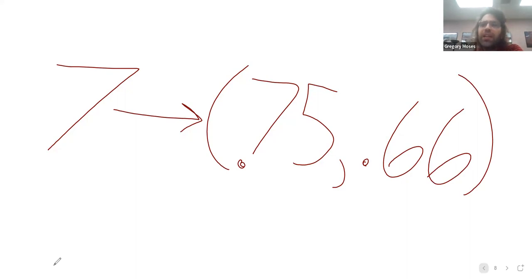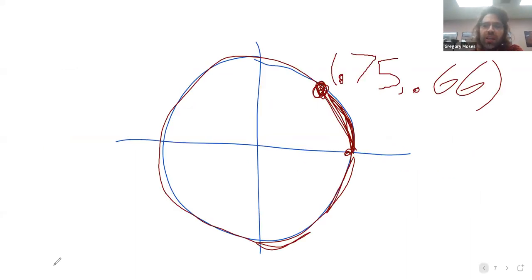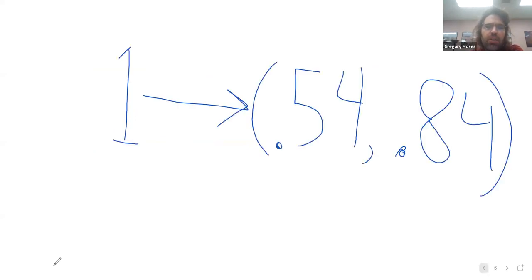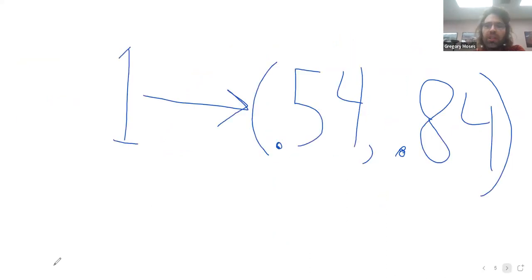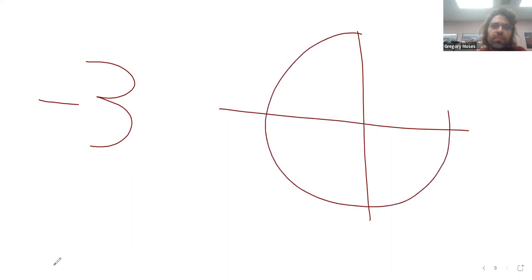You can have negative inputs as well. And I sort of touched on this. I said back here that we were going counter-clockwise because our input is positive. If we have a negative input we start at the same place. We still start here and we walk clockwise around the circle.